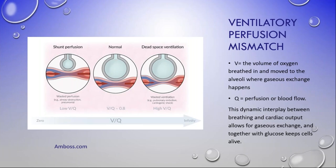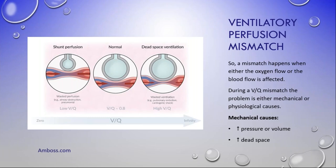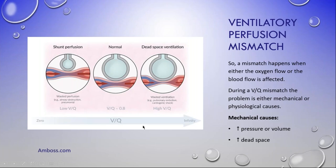If there is a VQ mismatch, it occurs when either oxygen flow or blood flow is affected. An obstruction in the airway could cause it. Mechanically, too much pressure — as seen in dead space ventilation — pushes down on the capillary bed and prevents gaseous exchange. The two main mechanical causes are too high pressure or volume, and increased dead space. If a patient on high pressure has their saturation rise when disconnected for suctioning, it may indicate a VQ mismatch on the pressure or volume side.